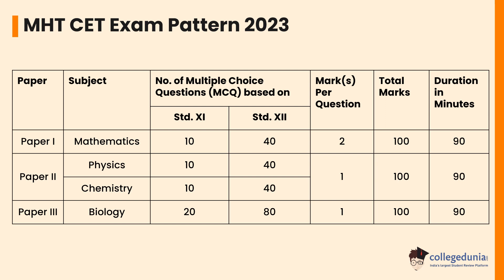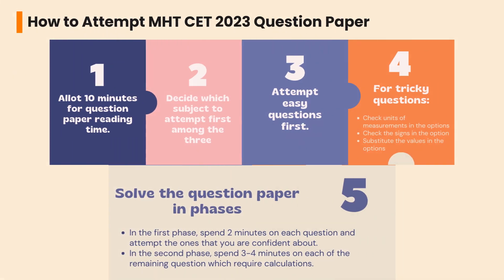Let's discuss the steps to attempt a MST-CET 2023 question paper. For this section, 20 MCQs are asked from 11th standard and 80 questions from class 12th, with one mark allotted for each correct answer, making the total marks 100. These 100 questions are to be solved in 90 minutes.